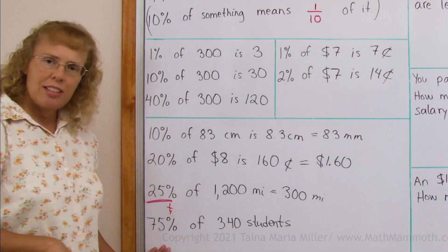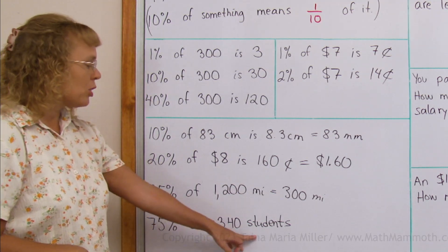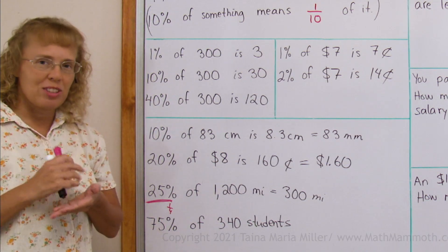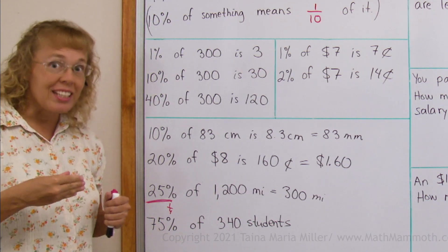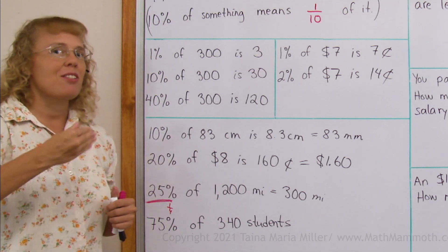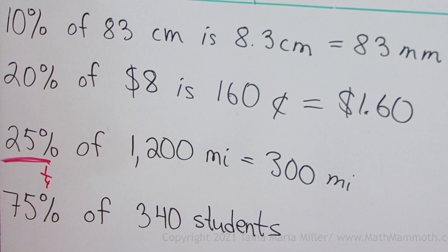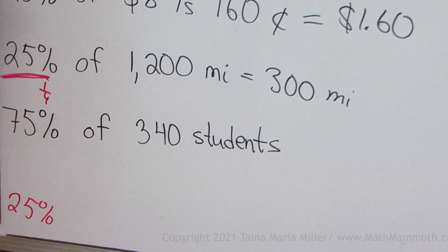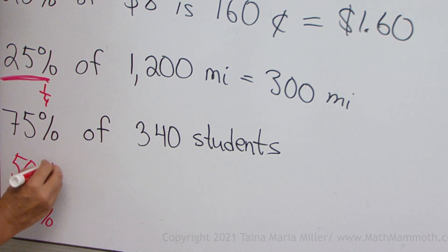Lastly, seventy-five percent of something. Three hundred forty students. Seventy-five percent. The mental math shortcut would be that you first find twenty-five percent, and then you go that times three. So let's first find twenty-five percent. Or, I'm going to put it here. In between,